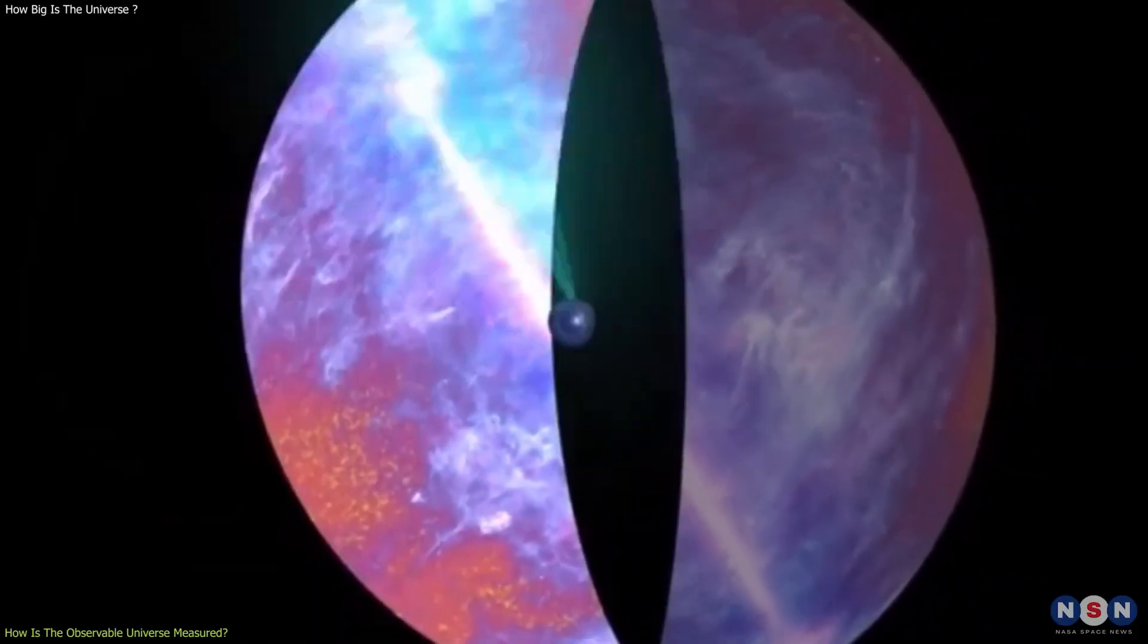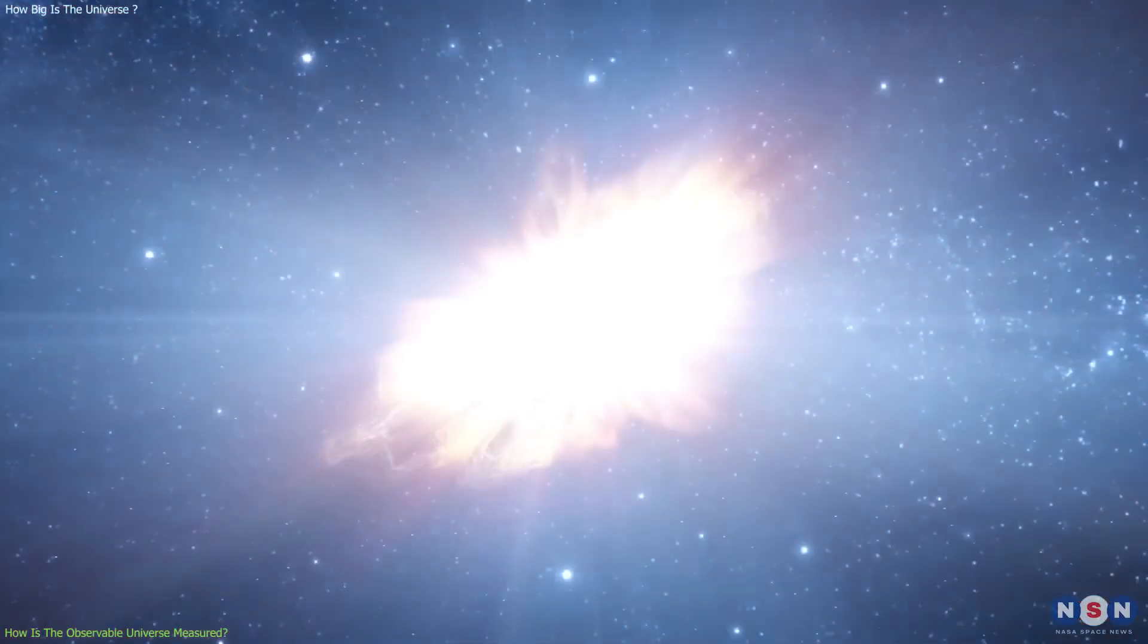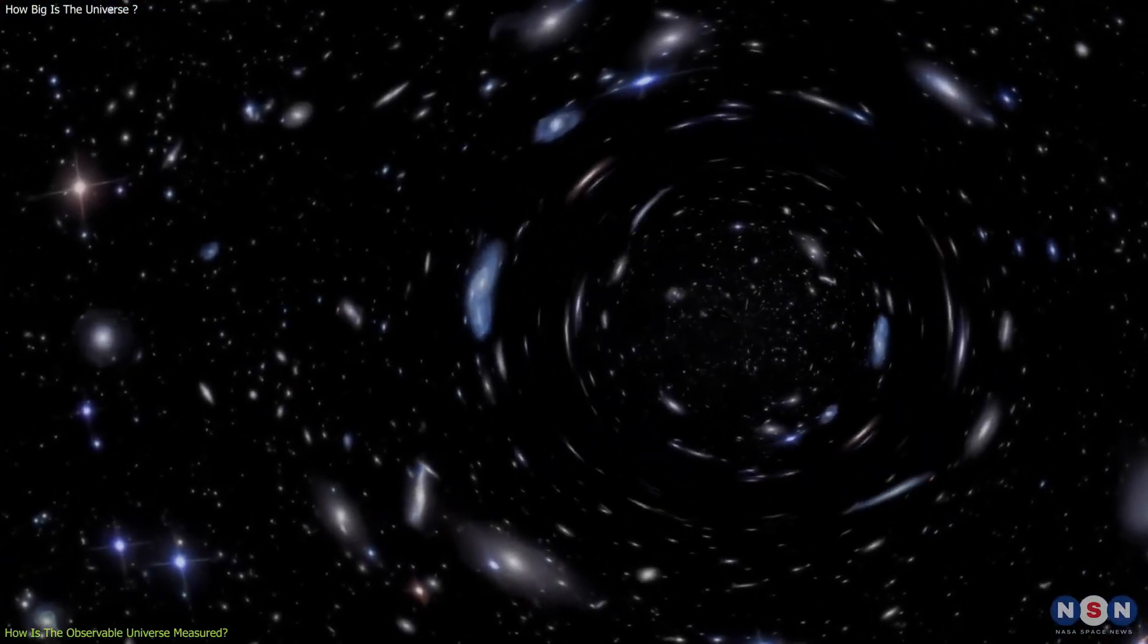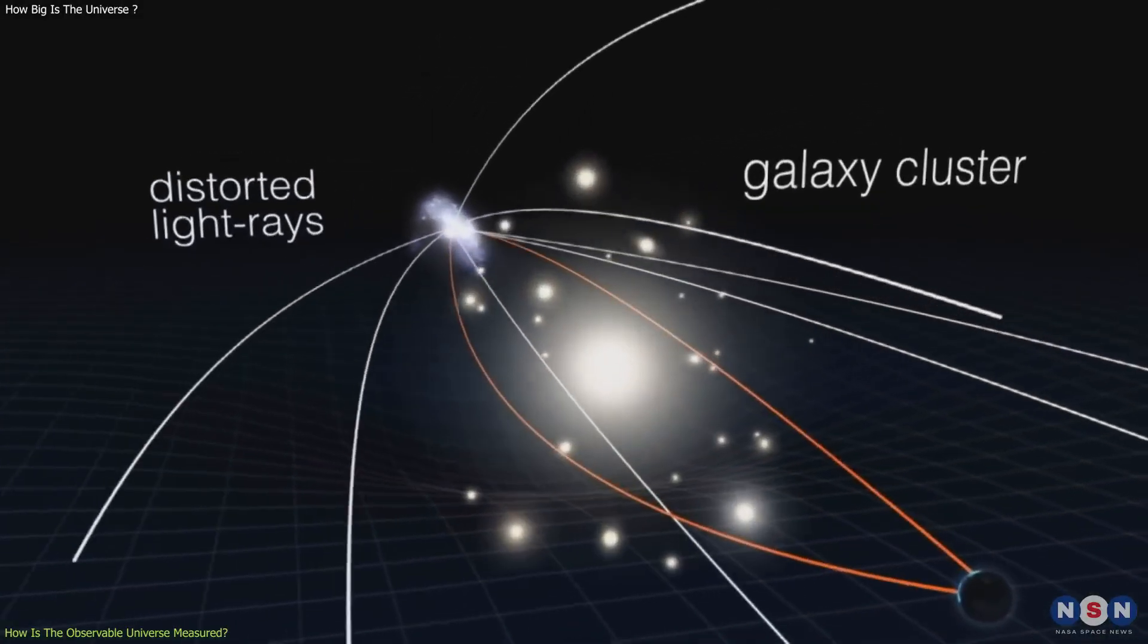Some methods use the CMB data, some use the supernovae, which are exploding stars, some use the gravitational lensing, which is the bending of light by massive objects, and some use other techniques.